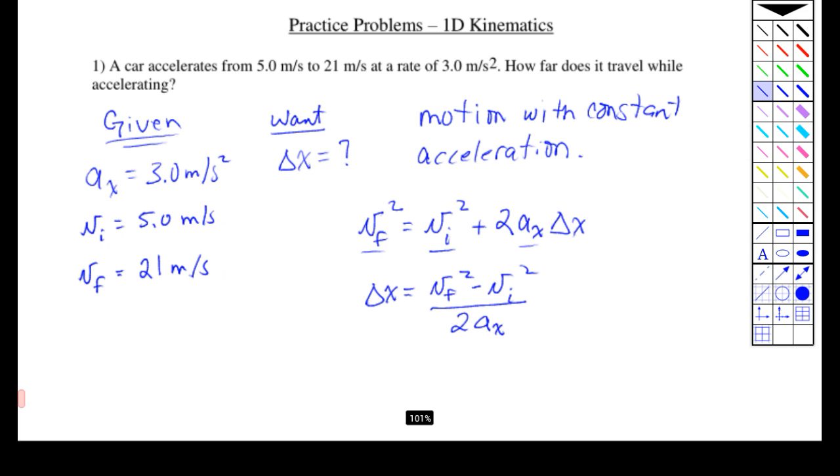And it's just now a matter of plugging in all the given quantities that we have in the problem. So we have 21 meters per second squared, minus 5 meters per second squared, divided by 2 times the acceleration, which is 3.0 meters per second squared.